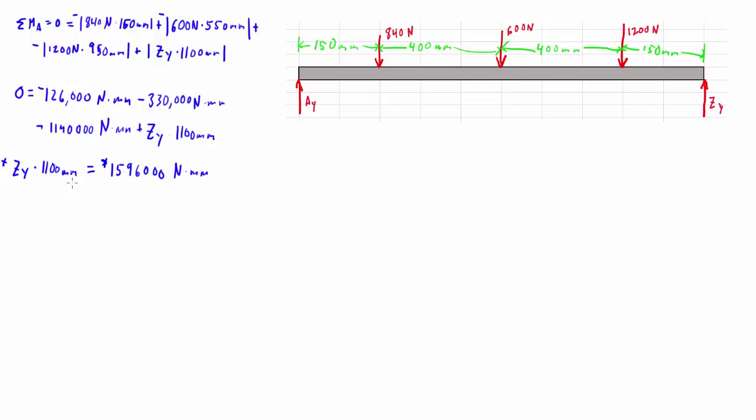So solving for ZY, we just divide both sides by 1100 millimeters. Millimeters here cancel out, and ZY equals 1451 Newtons.